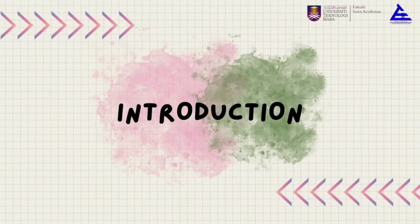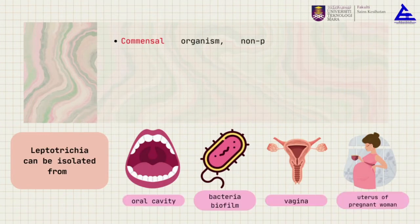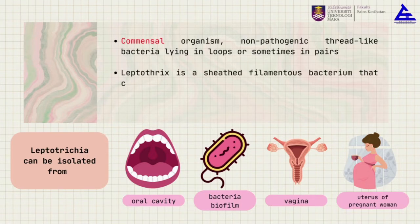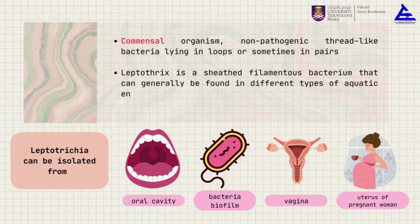What is Leptothrix? It is a commensal organism and a filamentous specimen generally found in different types of aquatic environments. From a journal by Van der Wilde (2002), Leptothrix is found in groundwater. Leptothricia is isolated from the oral cavity and is mainly found in bacterial biofilm, and also from the vagina and uterus of pregnant women.